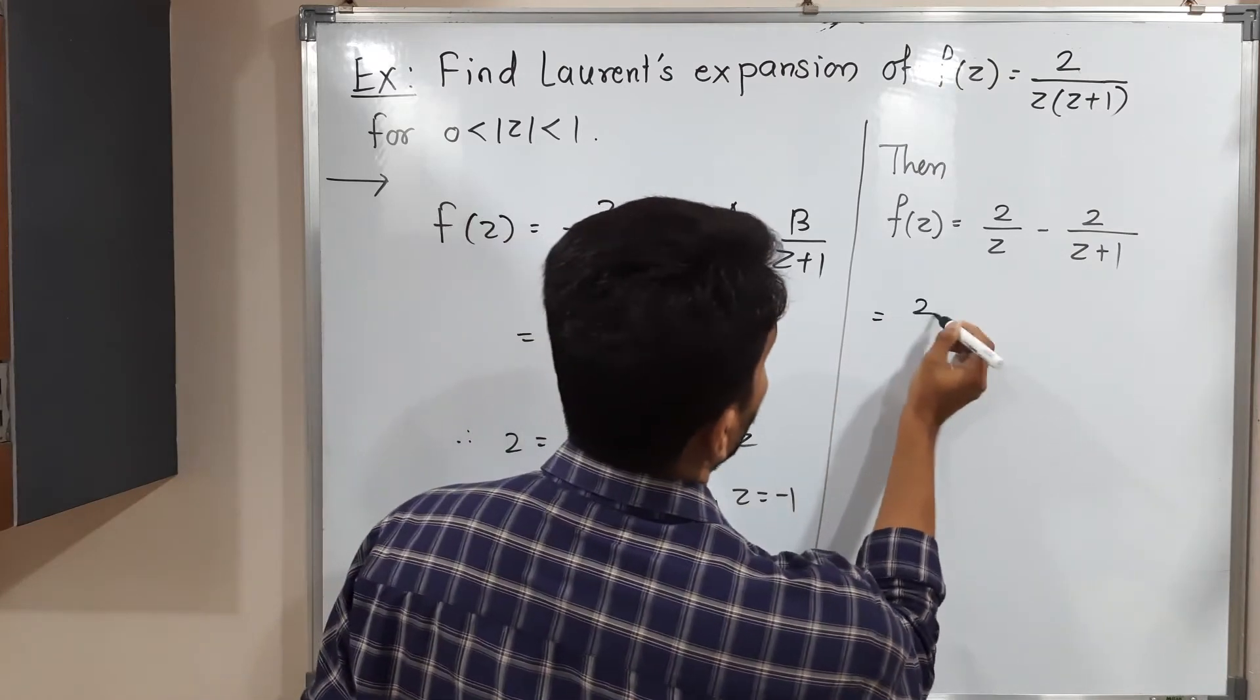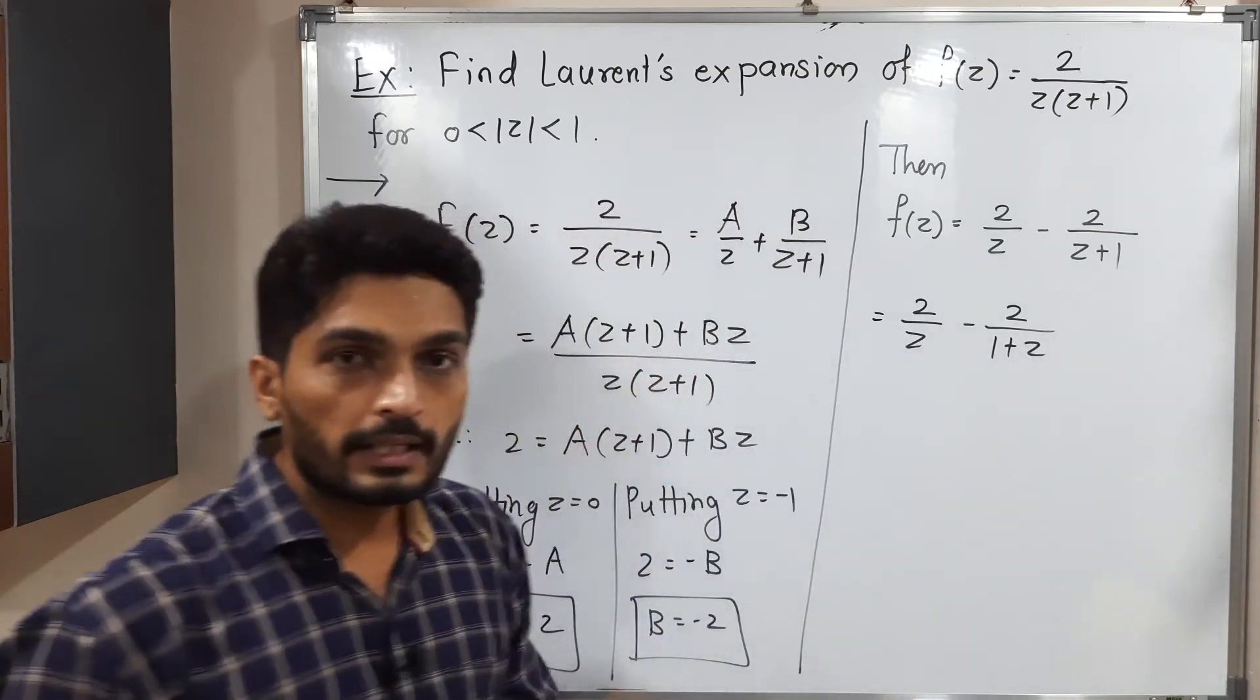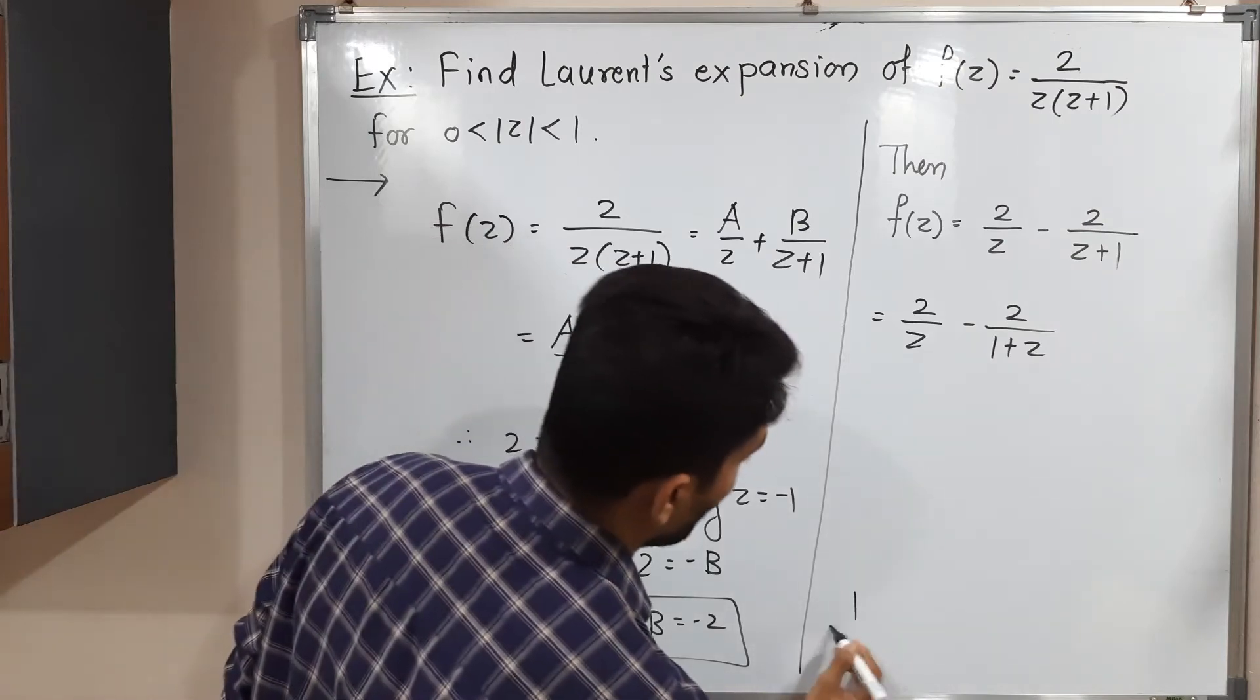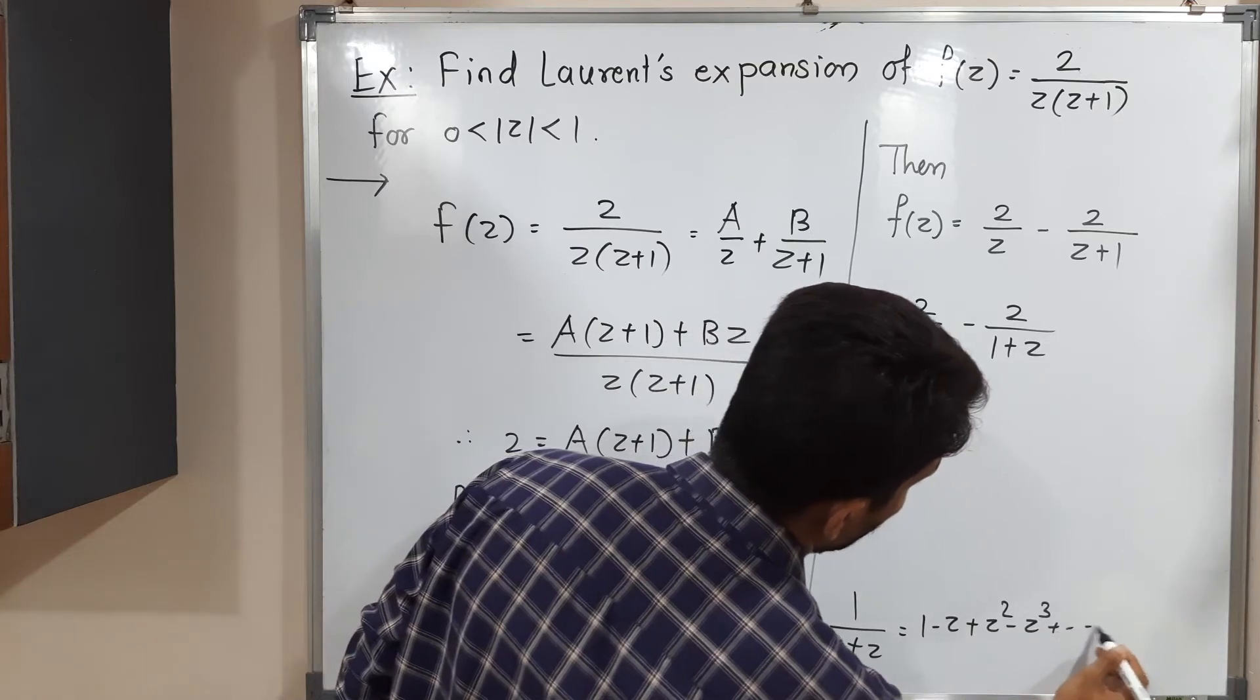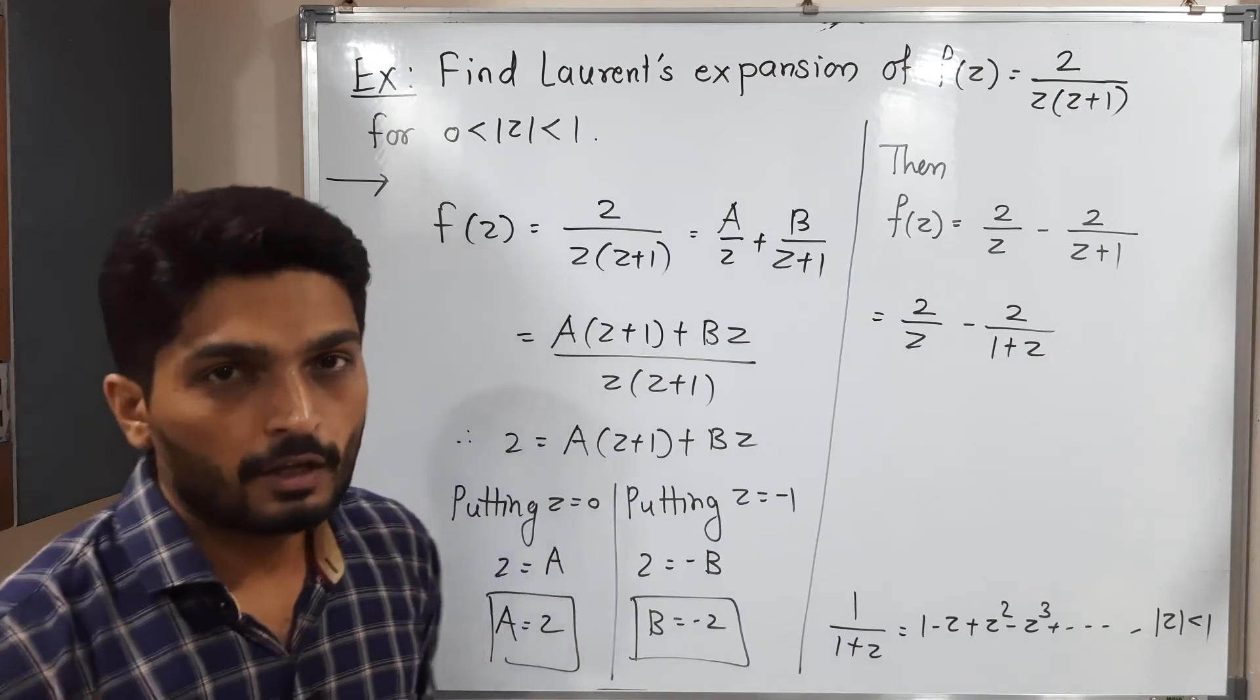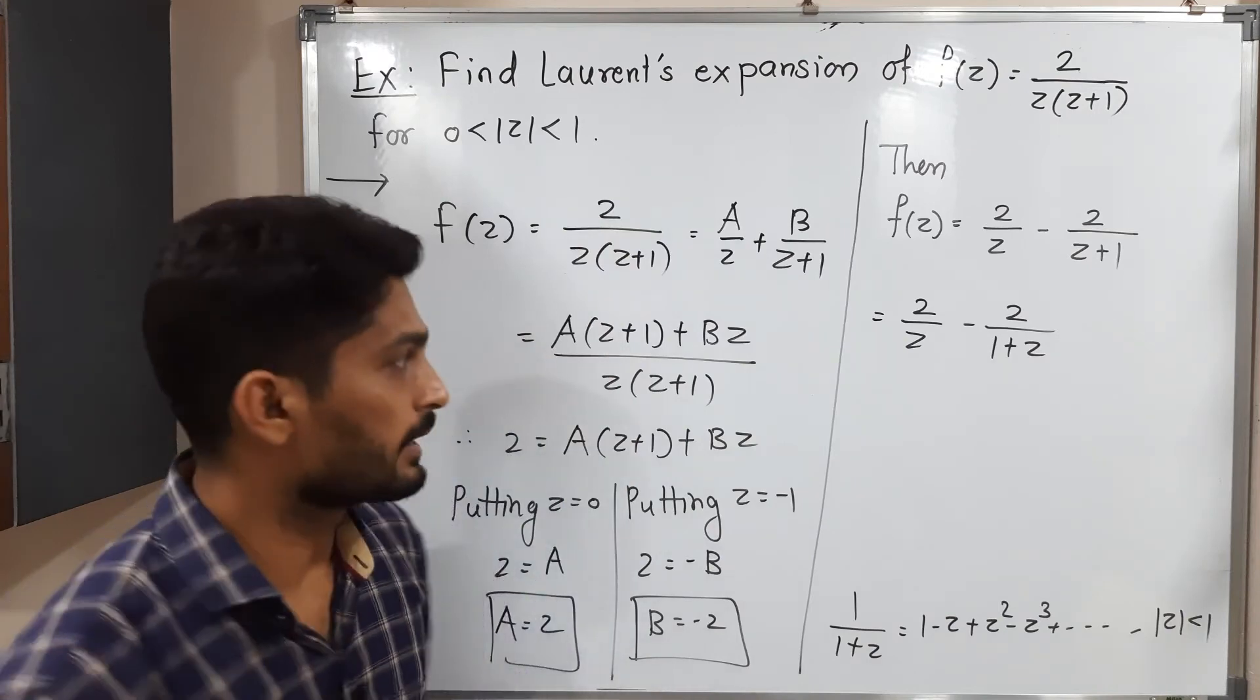This equals 2 by z minus 2 upon, instead of z plus 1, I will write 1 plus z. There is a series expansion for 1 upon 1 plus z. This equals 1 minus z plus z squared minus z cubed. This series is applicable for mod z less than 1. Fortunately, that condition they have already given. So we can directly expand it.